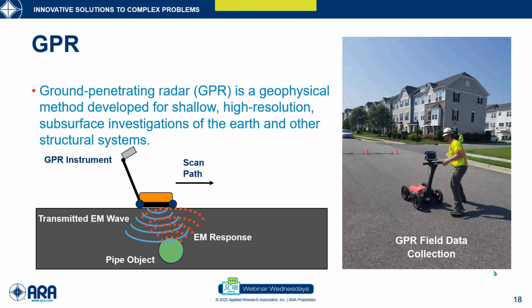GPR systems come in various sizes. They can be ground-coupled systems or vehicle-mounted. A ground-coupled system is pushed along a scan path. It uses an appropriate antenna configuration to send EM waves into the ground, shown in blue, and then receives a response to the material and its contents for processing, shown in orange. The systems today can present these results in real-time for the operator to visualize.